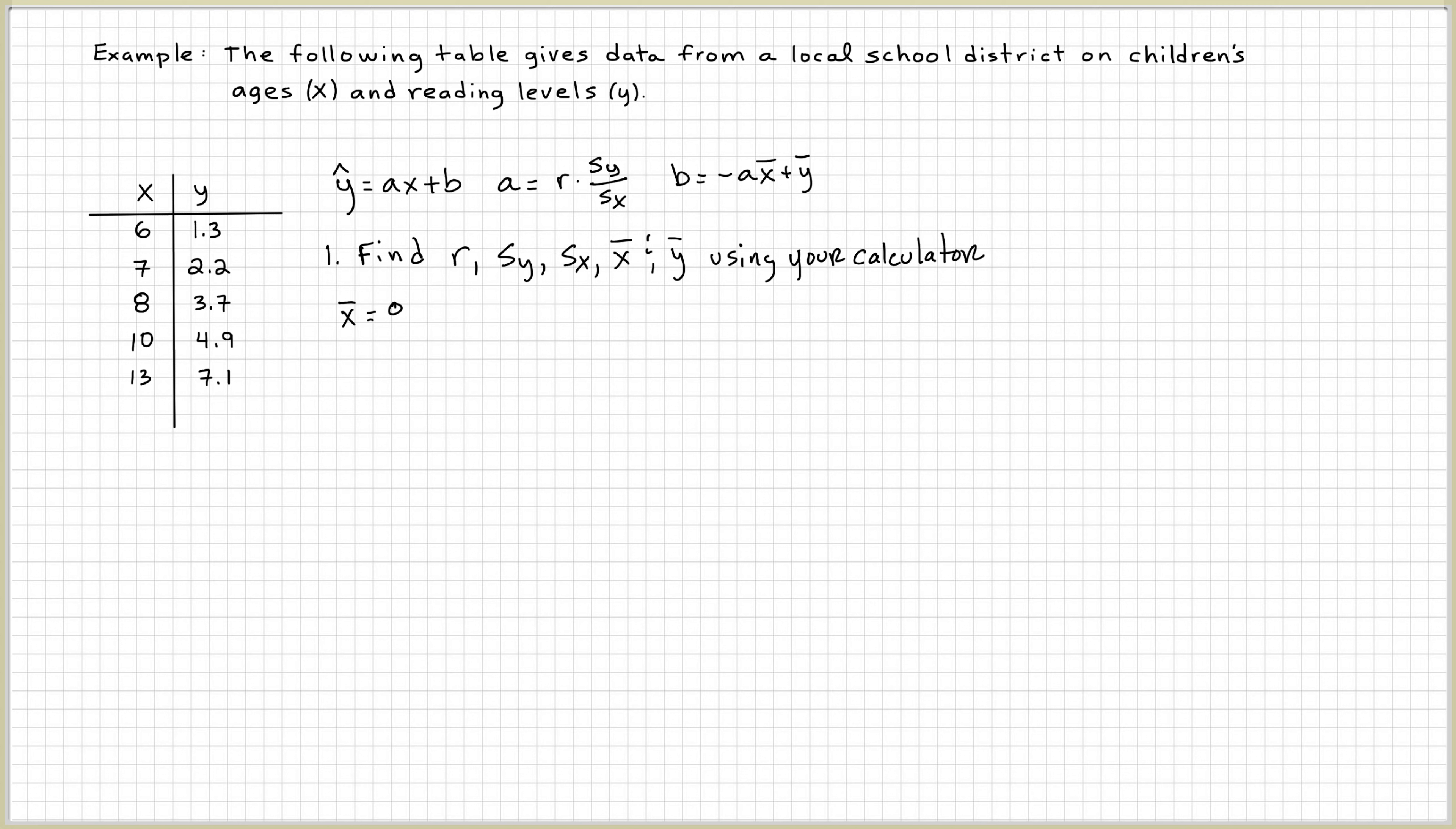But ultimately, the payoff is that you can calculate the slope and the y-intercept. But in this case, we're going to use our calculator to calculate r, sy, sx, x bar, y bar. And these are the values on the screen. x bar is 8.8, sx is 2.775, y bar is 3.84, sy is 2.286, r is equal to 0.991.